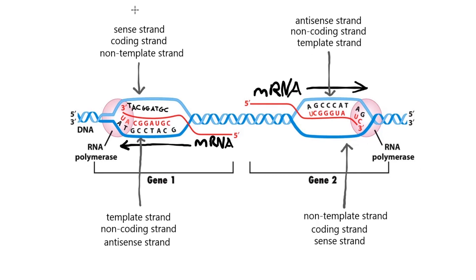So the sense strand is what the ribosomes sense — you're sensing the codons. This is what is ultimately expressed into proteins, so this is what the cell will sense as what to make. That makes sense if it's the sense strand. But the opposite strand is the antisense strand — it doesn't make sense.